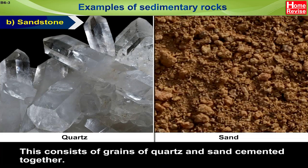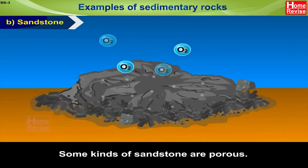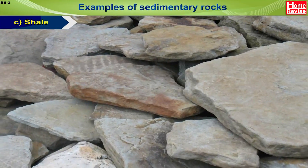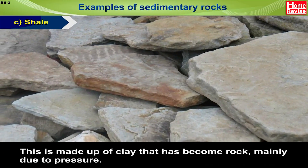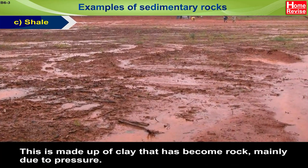B. Sandstone. This consists of grains of quartz and sand cemented together. Some kinds of sandstone are porous. C. Shale. This is made up of clay that has become rock, mainly due to pressure.